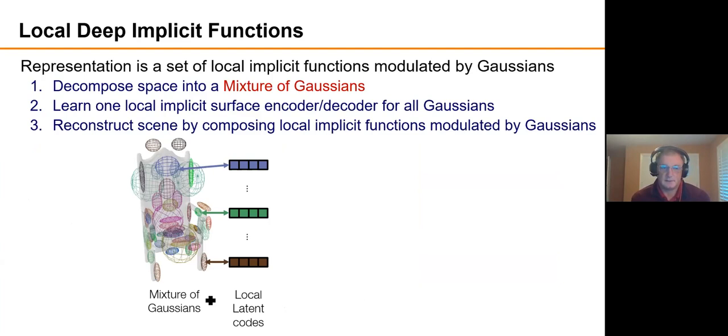Instead of decomposing space into grid cells, it's decomposed space into a mixture of Gaussians. So each of these ellipsoid looking things drawn in wireframe describes a region of space which has smooth falloff with a Gaussian. It's an anisotropic oriented Gaussian. And each of them has a latent code that is decoded by a deep network to produce a local implicit function. And then those local implicit functions are combined to produce the overall implicit function which defines the shape.